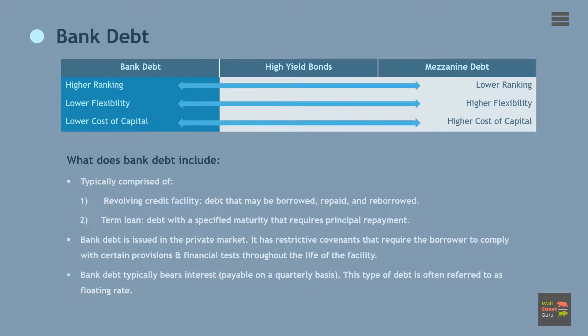Bank debt is issued in the private market. It has restrictive covenants that require the borrower to comply with certain provisions and financial tests throughout the life of the facility. Bank debt typically bears interest payable on a quarterly basis. This type of debt is often referred to as floating rate due to the fact that the borrowing cost varies in accordance with changes to the underlying benchmark rate.